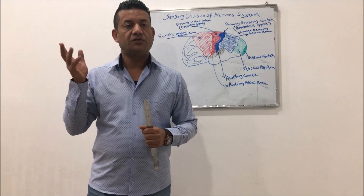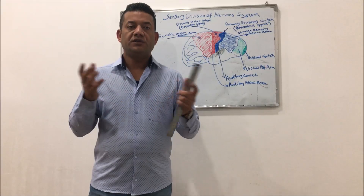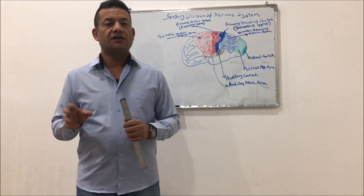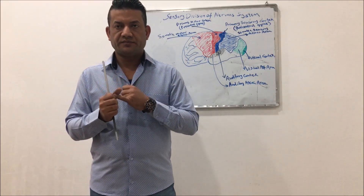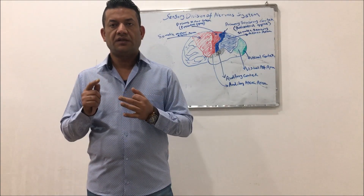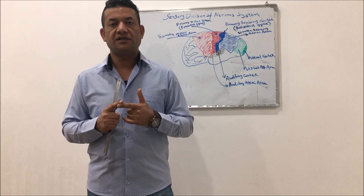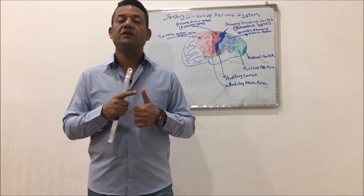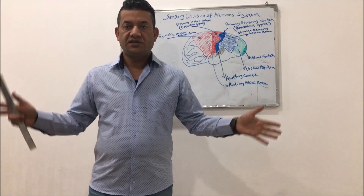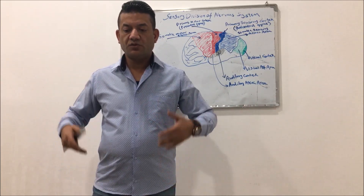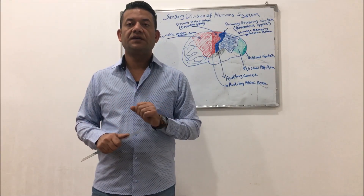The special senses include the vision, the hearing or audition, the smell or olfaction, the taste or gustation, and also the equilibrium. While the other sensations that come from all the parts of the body are called the somatic or somaesthetic sensations.